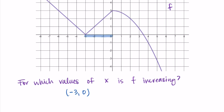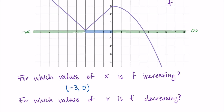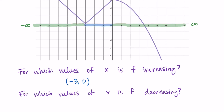For which values of x is f decreasing? The function starts by decreasing and also ends by decreasing, so we have two intervals. These go off to negative infinity and positive infinity even though the graph only shows a piece. So the function is decreasing from negative infinity to negative three, union zero to positive infinity. Even if the question doesn't say 'for which values of x,' increasing and decreasing always want x values as answers.